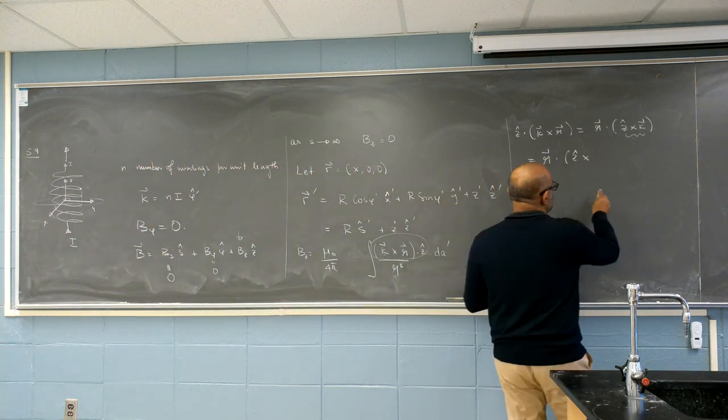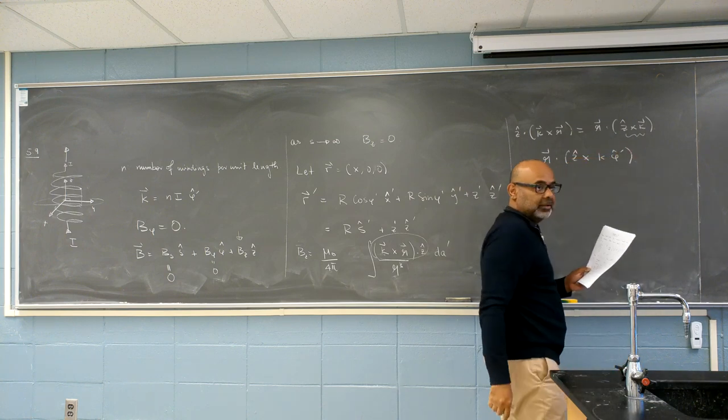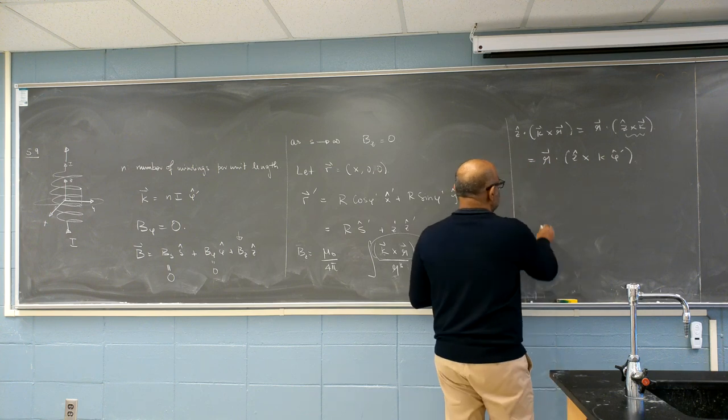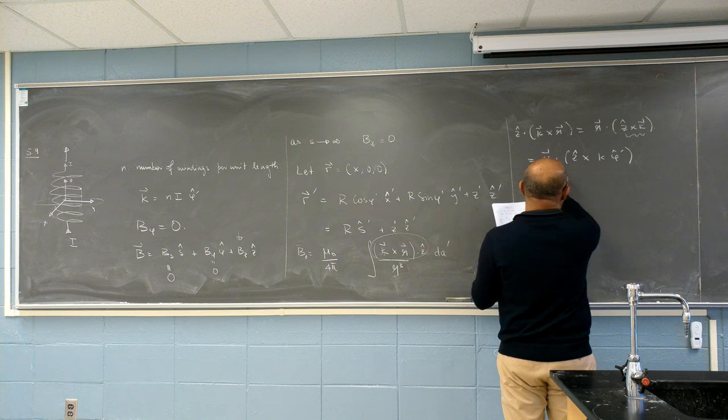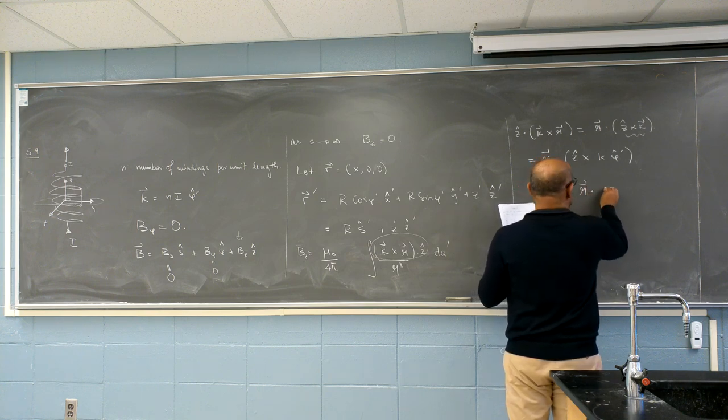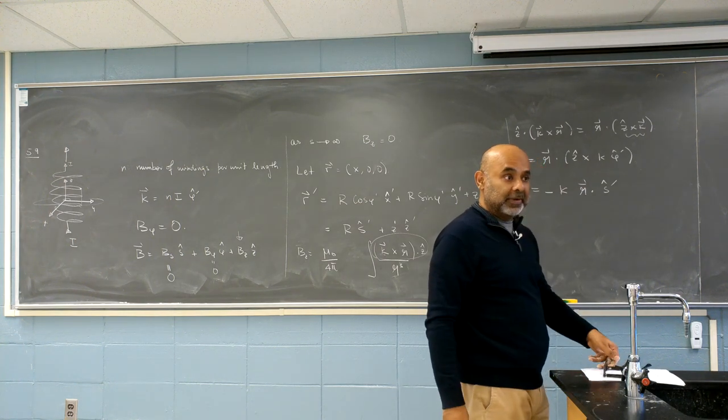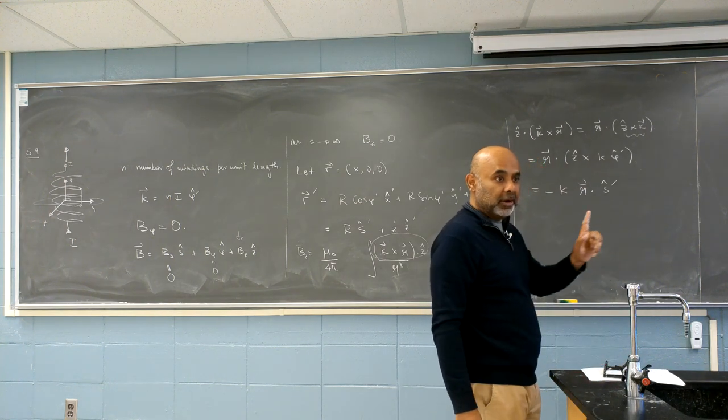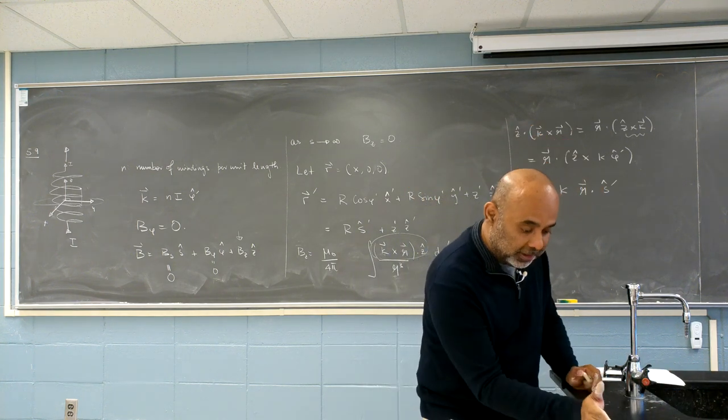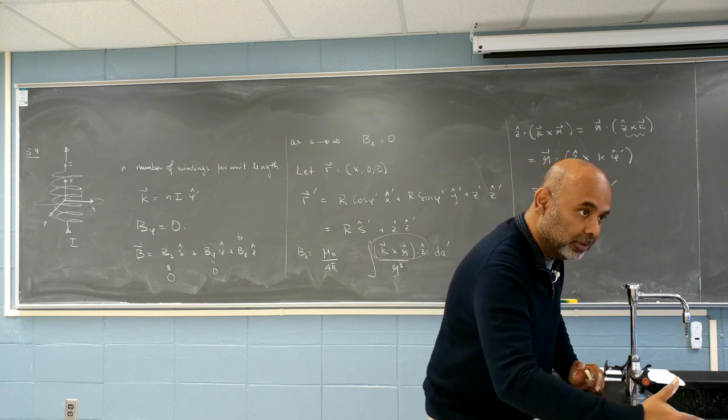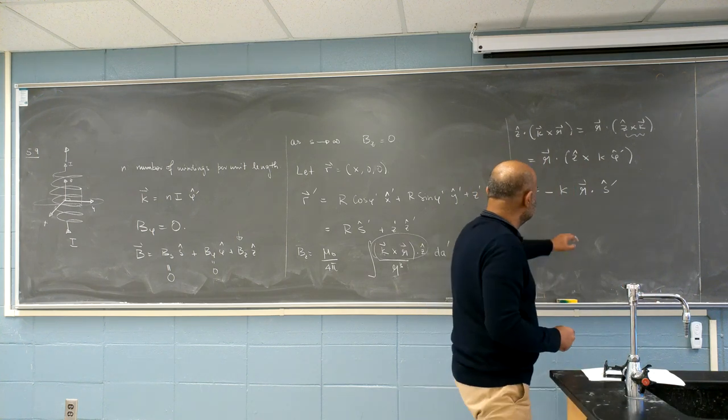And so that is. I can do it this easy. I think that's why I did that. Z hat cross. I don't care if it is. And I, well, let me just call it some magnitude. K. In the phi hat direction. So that I can write it as minus K. And I'm copying this down.